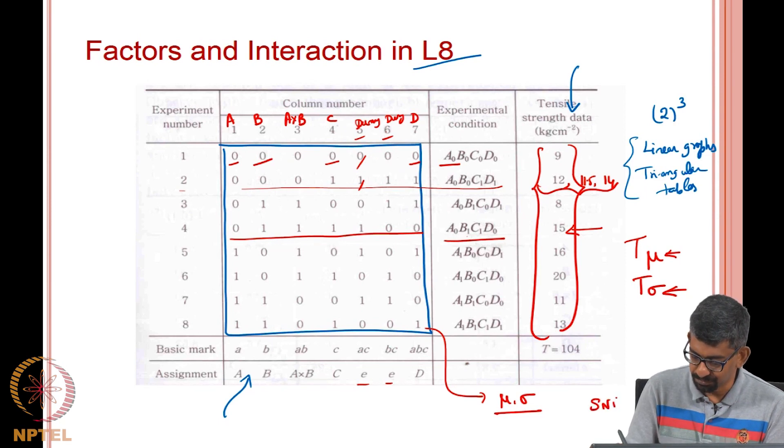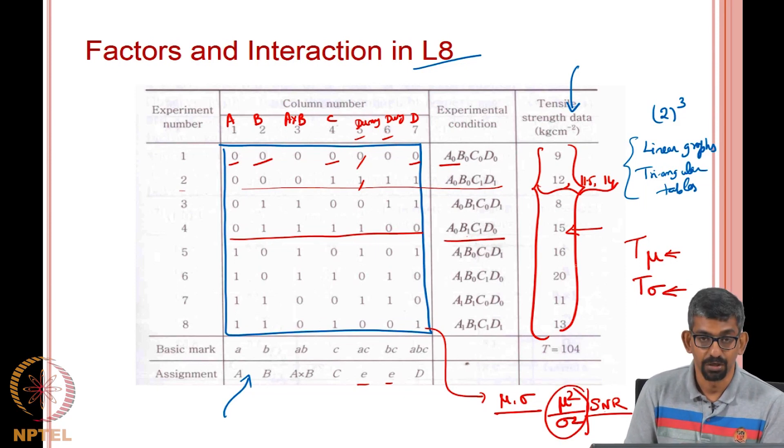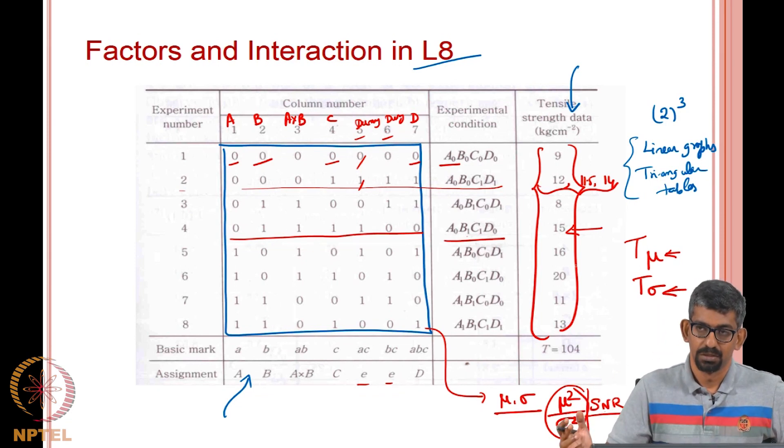There is something called an SN ratio. What does it tell you? Signal to noise. It is mu squared by sigma squared. If sigma is large, which means the noise is large, then this value is less. You actually want a better value of SNR, meaning the mean is also max, the sigma is less. When the sigma is less, then your SNR is going to be large. Mu squared by sigma squared is what you are looking at in this particular case, but there are also other types of SNR depending on what your quality characteristic.